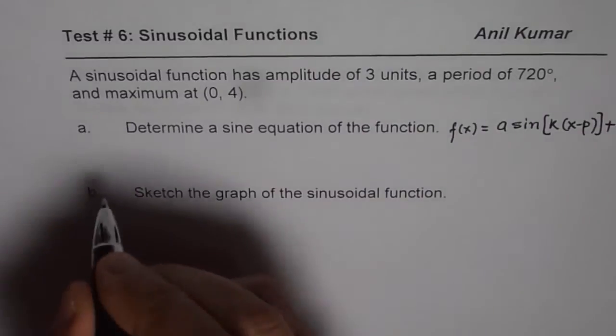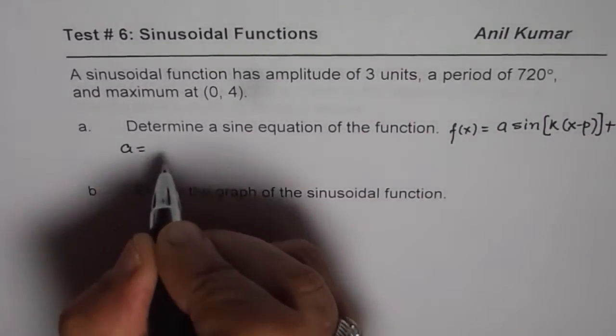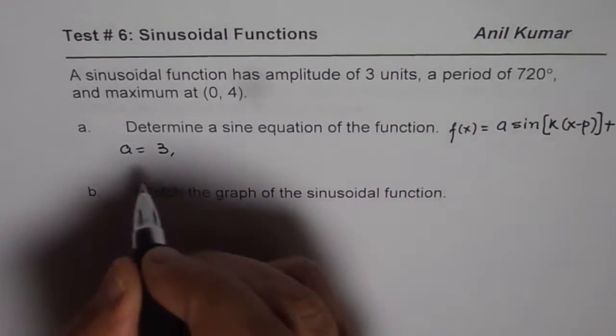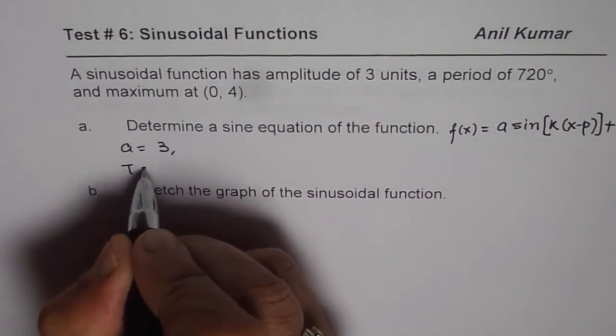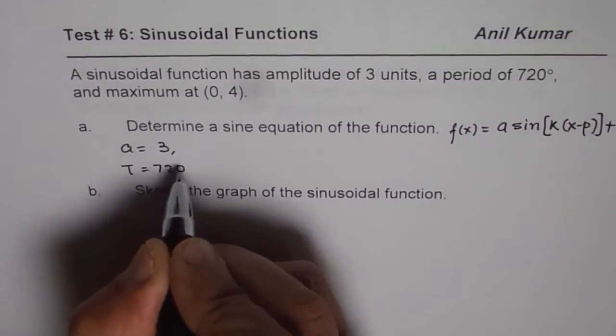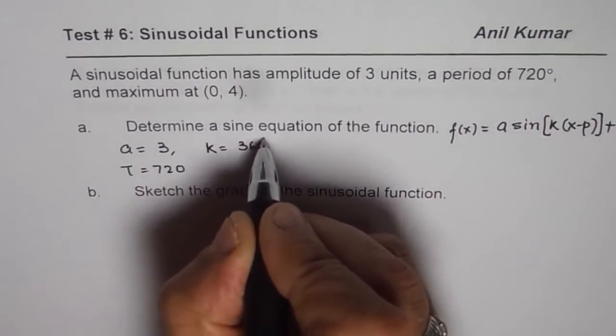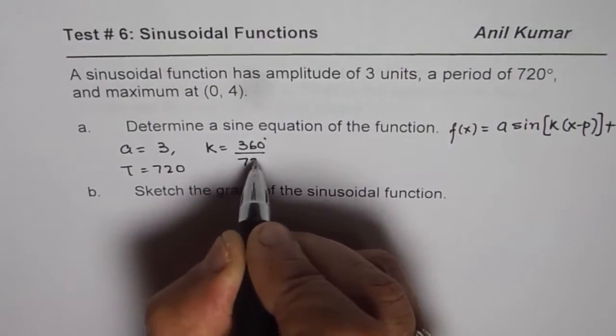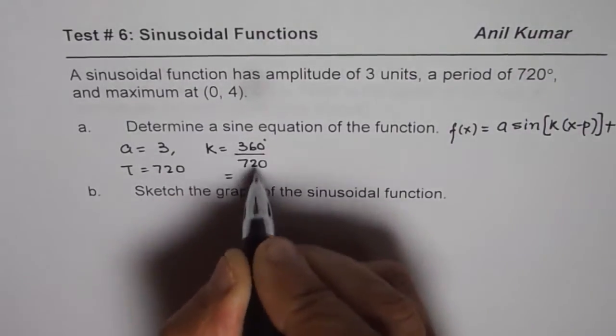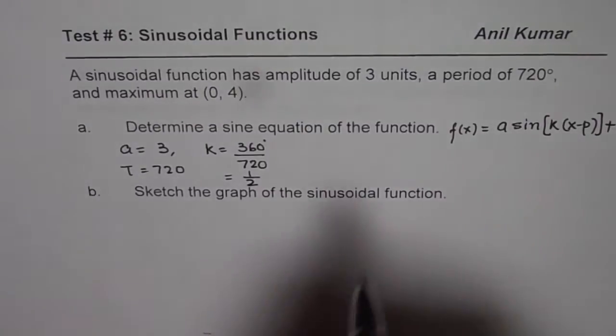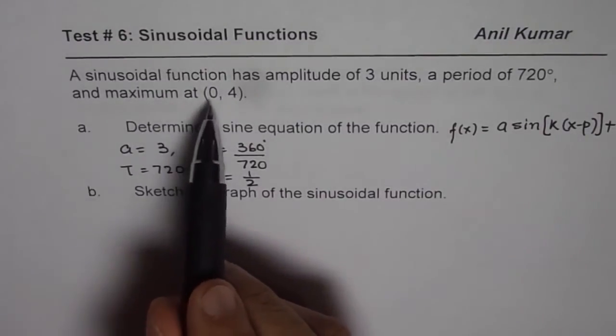Amplitude a is given to us, we say a equals 3 units. Period is 720 degrees. We know time period is 720 degrees. That means we can find k which will be 360 degrees divided by 720 and that gives us a value of half. So k is half for us.